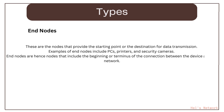End nodes provide the starting point or the destination for data transmission. Examples of end nodes include PCs, printers, and security cameras. End nodes are hence nodes that include the beginning or terminus of the connection between the device and the network.